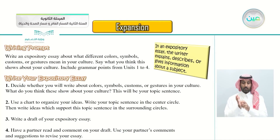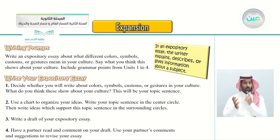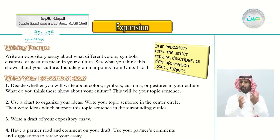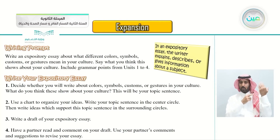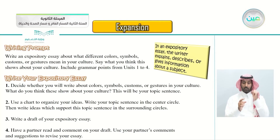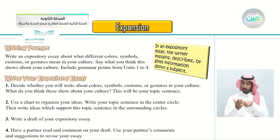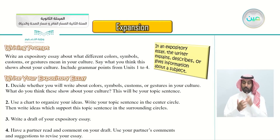Include grammar points from units 1 to 4 - all the grammar points taken in this curriculum. To write your expository essay: number one, decide whether you will write about colors, symbols, customs, or gestures in your culture. What do you think these show about your culture? This will be your topic sentence - the first sentence in the first paragraph. Use a chart to organize your ideas, write your topic sentence in the center circle, then write ideas which support this topic sentence in the surrounding circles.